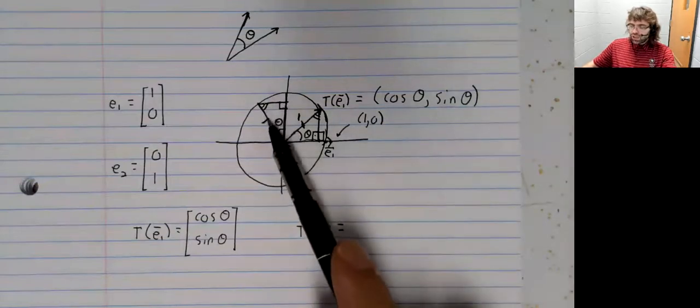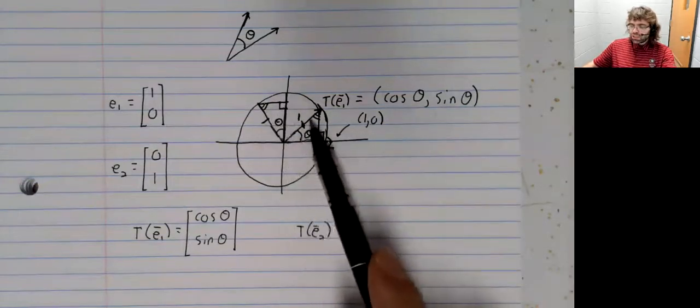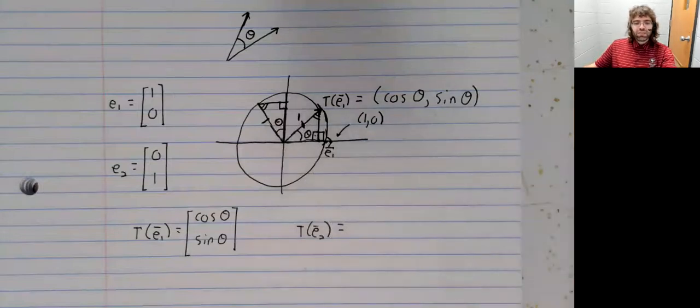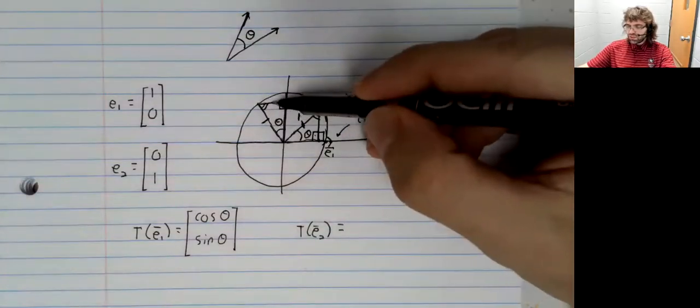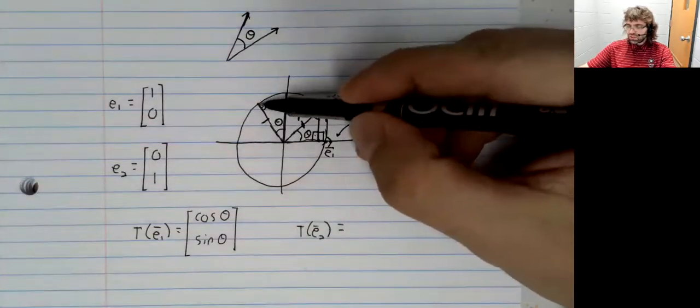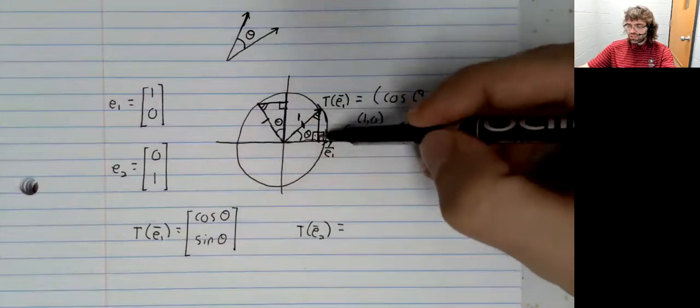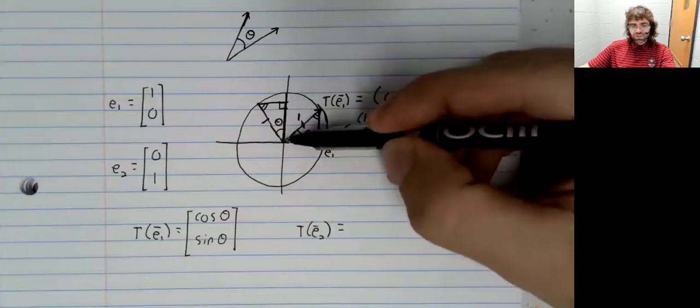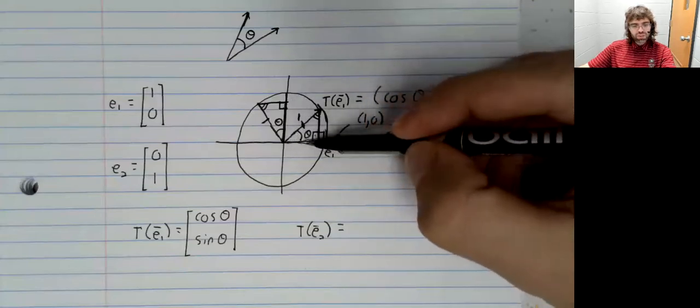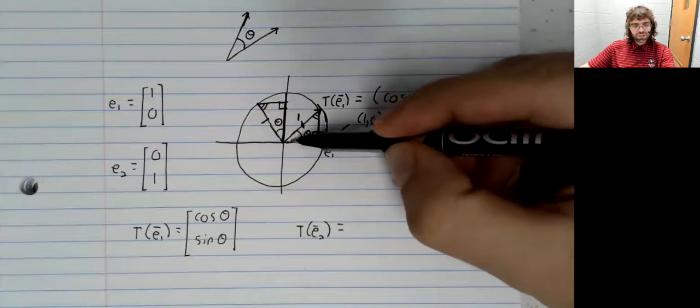And because these hypotenuses are the same, that means that all of the sides are the same. So this distance equals this distance, and this distance equals this distance.